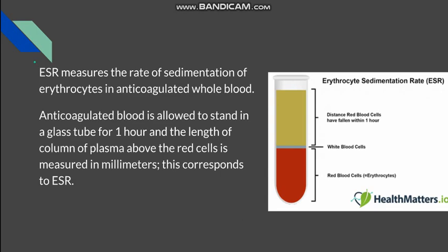What is ESR? ESR stands for erythrocyte sedimentation rate — it is the rate of sedimentation of erythrocytes in anticoagulated whole blood. We allow the anticoagulated blood to stand in a glass tube for around 1 hour. The erythrocytes form rouleaux and start falling down, leaving plasma above. We measure the length of the plasma column formed in 1 hour. The units of ESR are millimetres per hour.